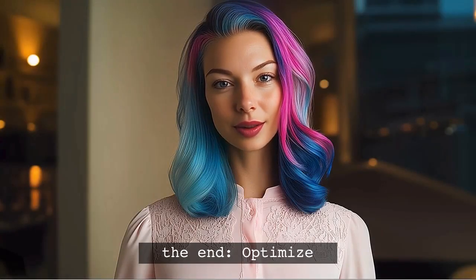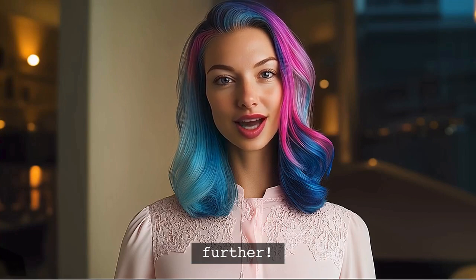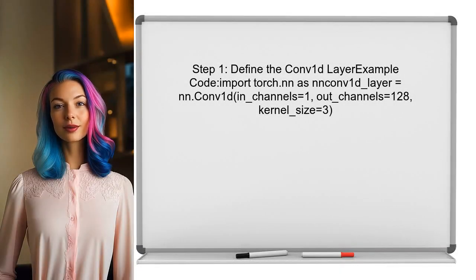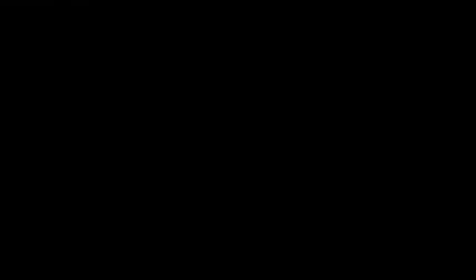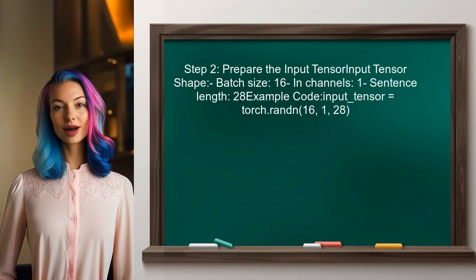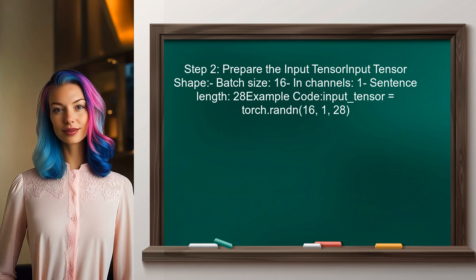At the end of this video, I will share a pro tip that will help you optimize your model even further. To implement a one-dimensional convolutional neural network for text classification in PyTorch, start by defining the Conv layer. This layer will take the input tensor and apply the convolution operation. Next, prepare the input tensor — it should have the shape of batch size, number of input channels, and the length of the sentence. In this case, the batch size is 16 and the sentence length is 28.